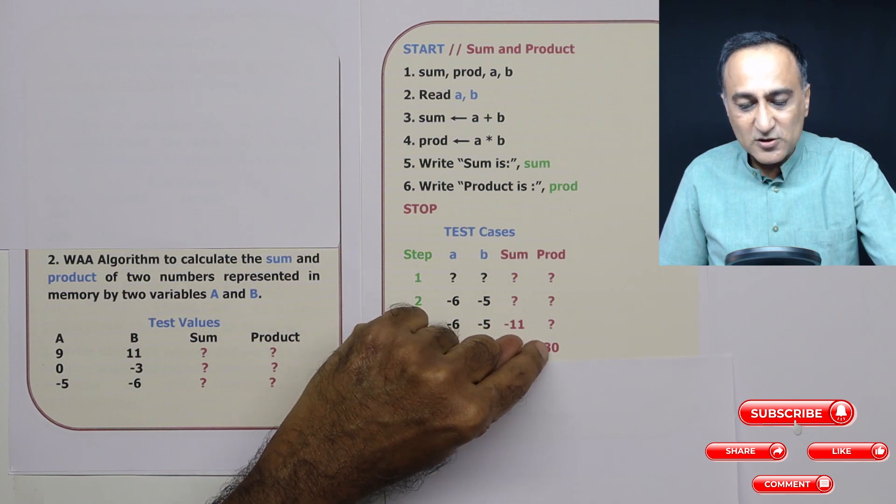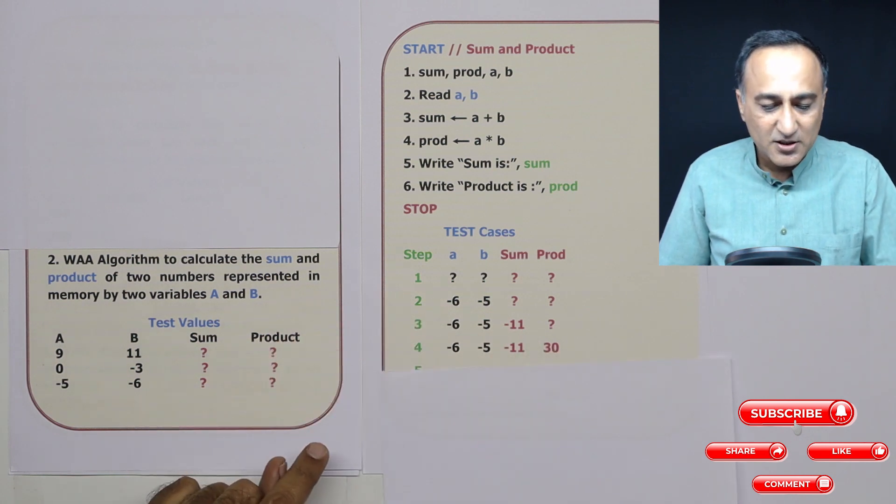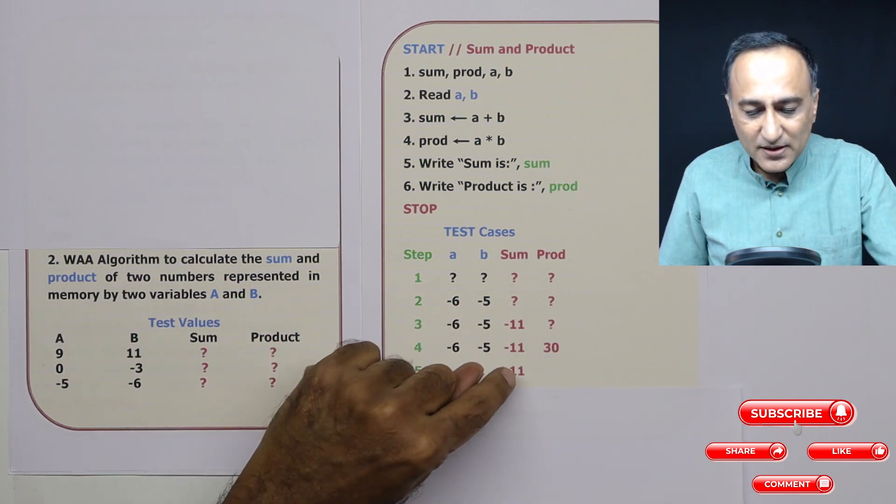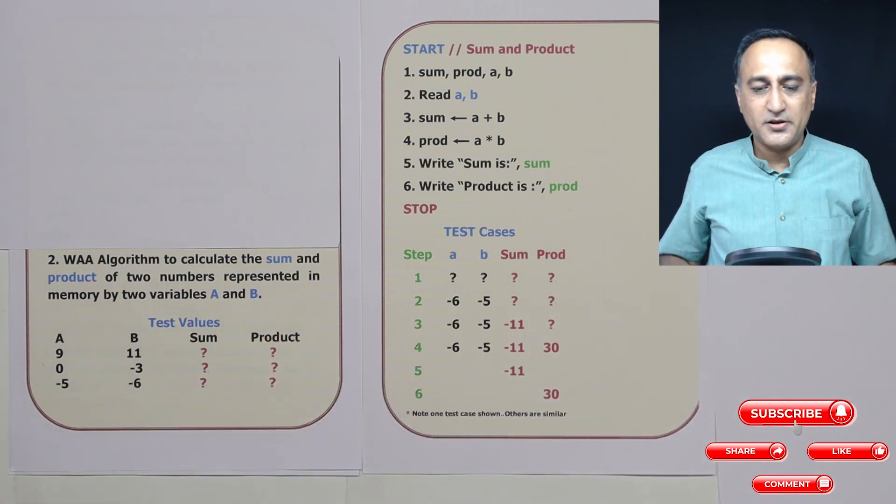Once I come to step four, product has also changed to 30. Minus 6 times minus 5, minus times minus is plus, so it's 30. Step five prints sum as minus 11. Step six prints product as 30.